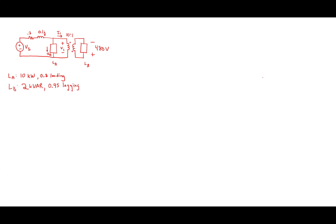Let's get the power triangles for Load A and Load B. Load A has 10 kilowatts at a 0.8 power factor leading. Load B has 2 KVARs at a 0.9 power factor lagging. I'll start with Load B. What have I been told about Load B? Two KVARs, 0.9 lagging.